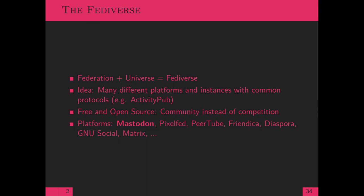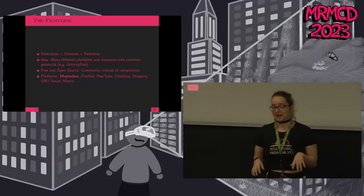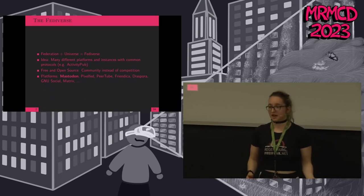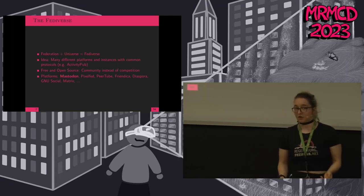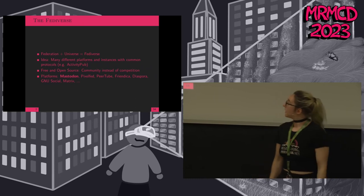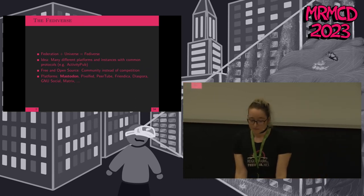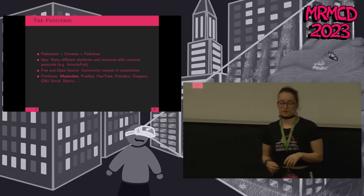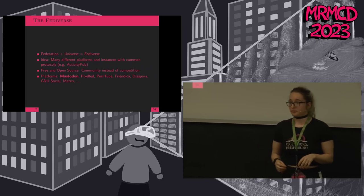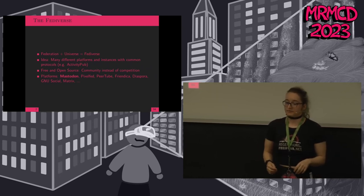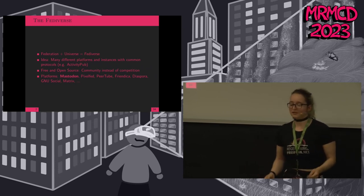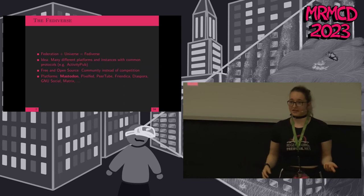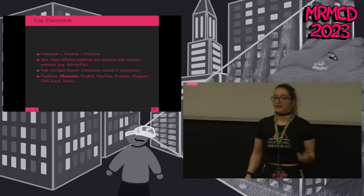The Fediverse consists of several different platforms communicating with common protocols. In the Mastodon case, this is ActivityPub, which is recognized by the World Wide Web Consortium as a decentralized social networking protocol. There are also other protocols for other platforms. Most Fediverse platforms are open source, so you can see the code and play around with it — totally different compared to a profit-driven company like Twitter or Meta.